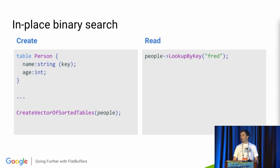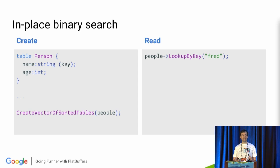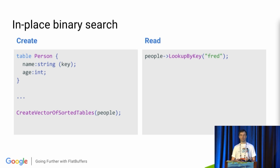FlatBuffers also has in-place binary search. The way this works: if you have a vector of tables, you can mark one of the fields as a key and have the vector sorted during serialization. This allows you to do fast binary search lookups directly on the buffer without having to create any map or dictionary structures.